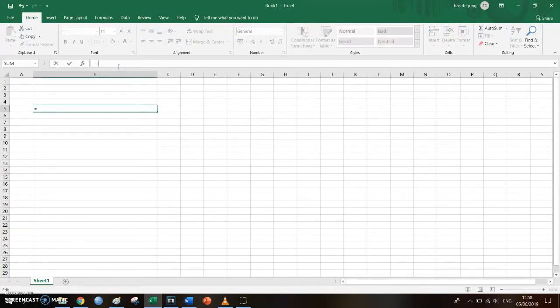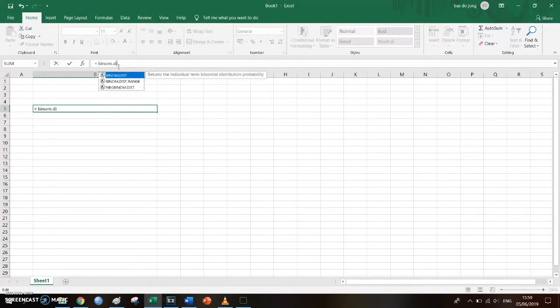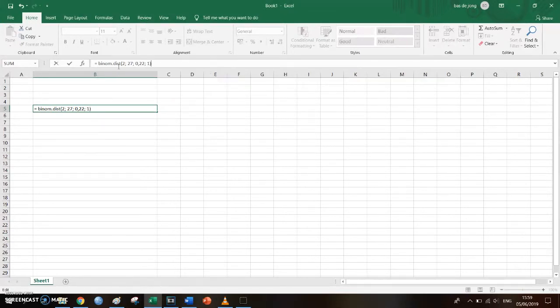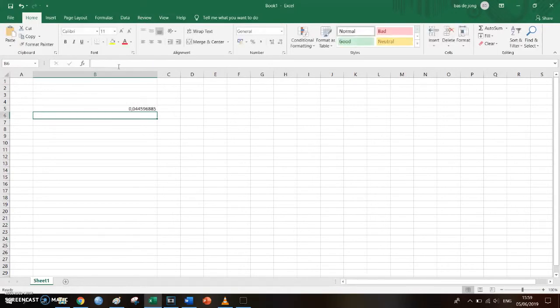And you say that that cell is BINOM.DIST and then between brackets: the number of wins, which is 2; the trials was 27; the population proportion is 0.22 in this case, because I think I have my Excel somewhere on Dutch; and the cumulative is always 1. And then you press Enter. You get the alpha of 0.0446. So the p is 0.0446.